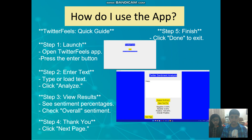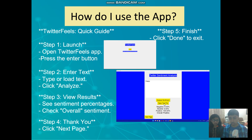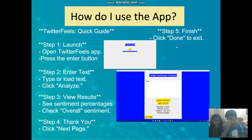This is our step-by-step guide on how to use our app — Twitter Fields. First, launch the app, then press the Enter button which is here. Then enter the text here. You can also use the Open Text File option, which opens an area I'll show you later. Then press Analyze Sentiment, view the results, press Next Page, and it shows you a thank you. Then press Done and it closes itself.